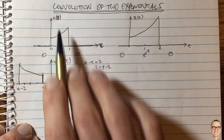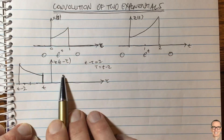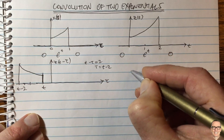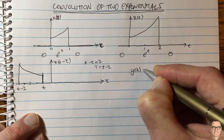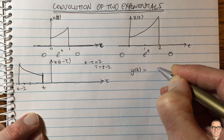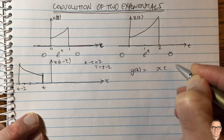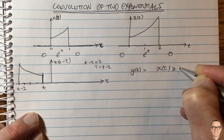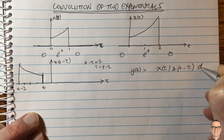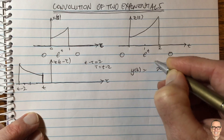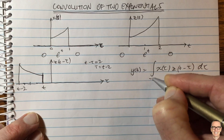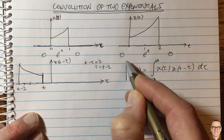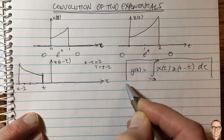We need to multiply these two together in the convolution equation: y(t) equals the integral from negative infinity to infinity of x(tau) times z(t minus tau) d tau. This is the convolution equation.